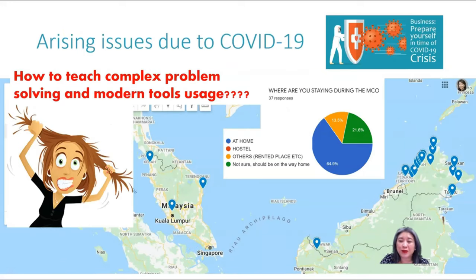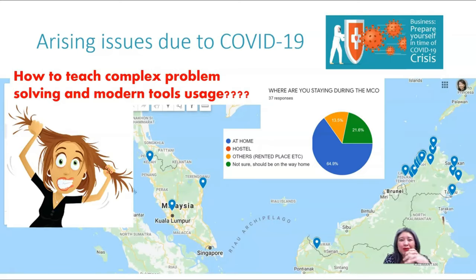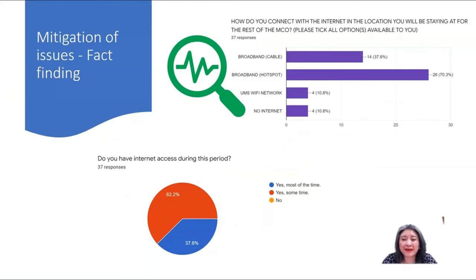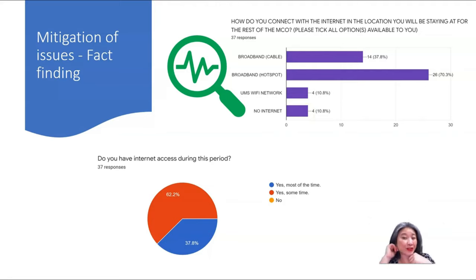Due to the arising issues from COVID, I think everybody started looking like this lady over here. The question was how to teach complex problem-solving and modern tool usage in this condition where all my students are scattered, and not a lot of them are in the hostel. Part of my fact-finding mission was the map and also questionnaires to ask them about broadband and internet access. I found out that some students misunderstood the question; some had internet but not strong. After discussion, you get to find out further how things are for them.